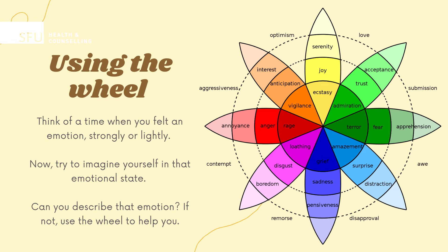The emotions between the colored sections of the wheel are combinations of the basic emotions. On the wheel, you can see that anticipation and joy combine to become optimism. To use the wheel when you are not currently feeling one of the emotions listed, try to put yourself in the shoes of that feeling.